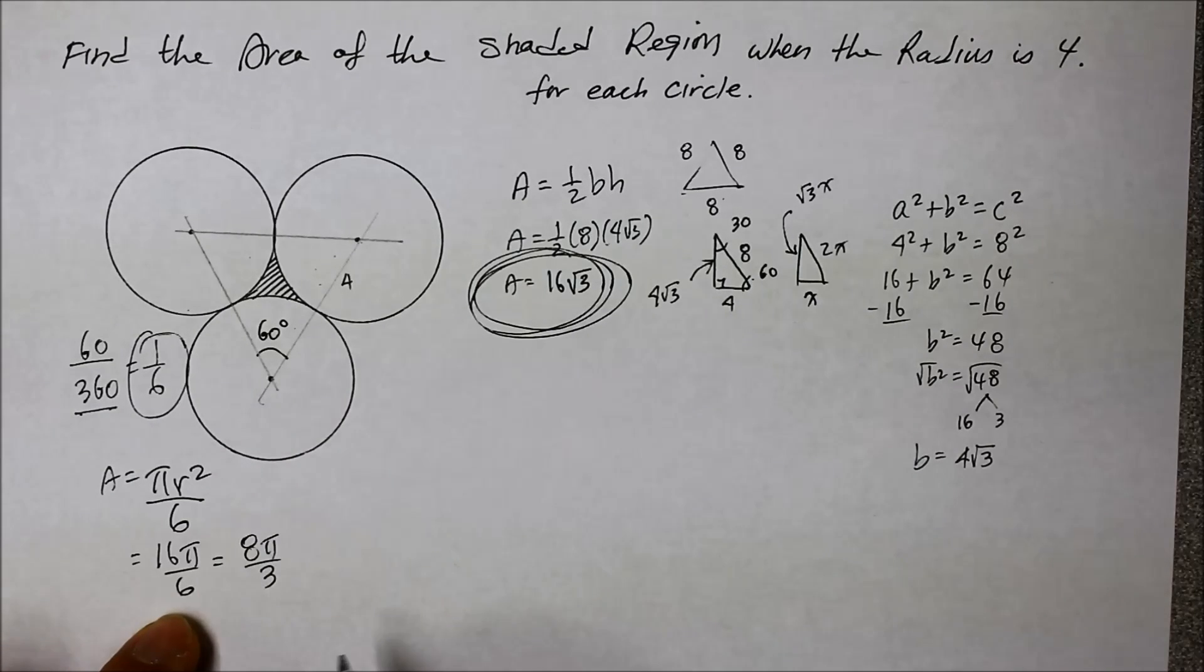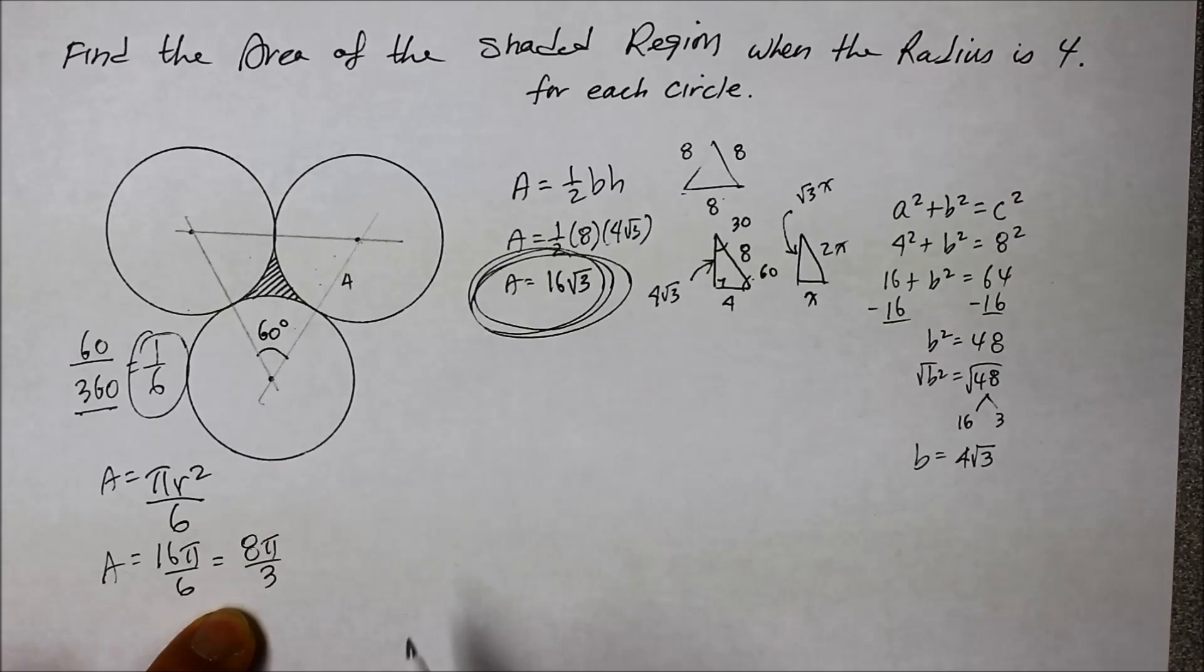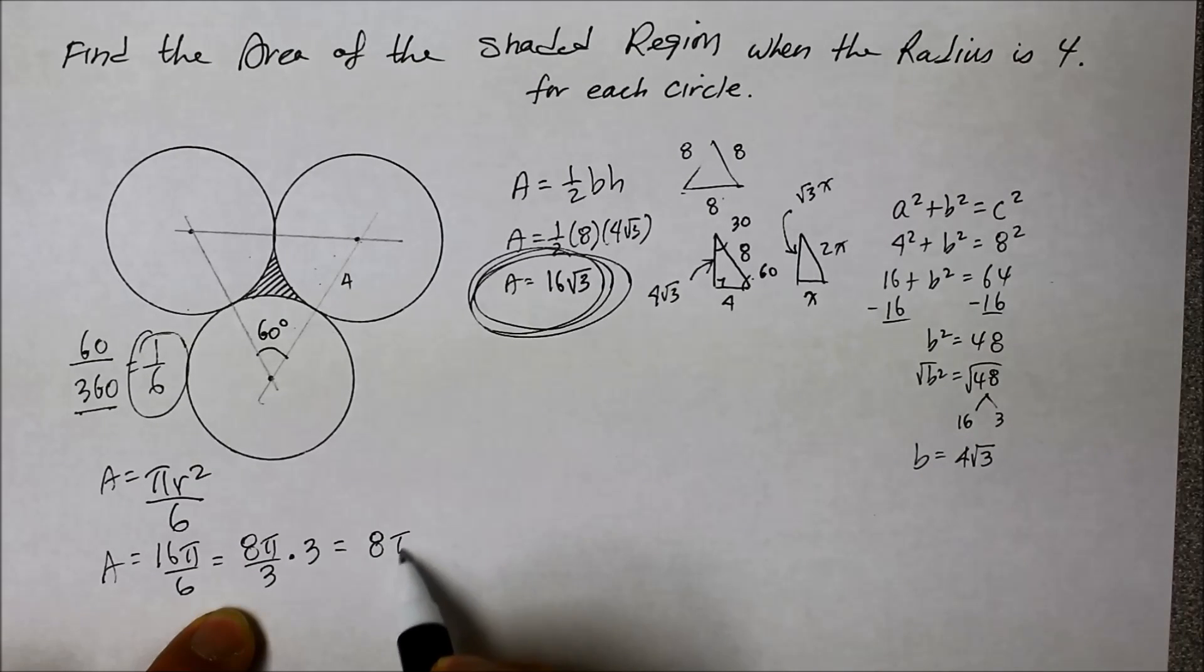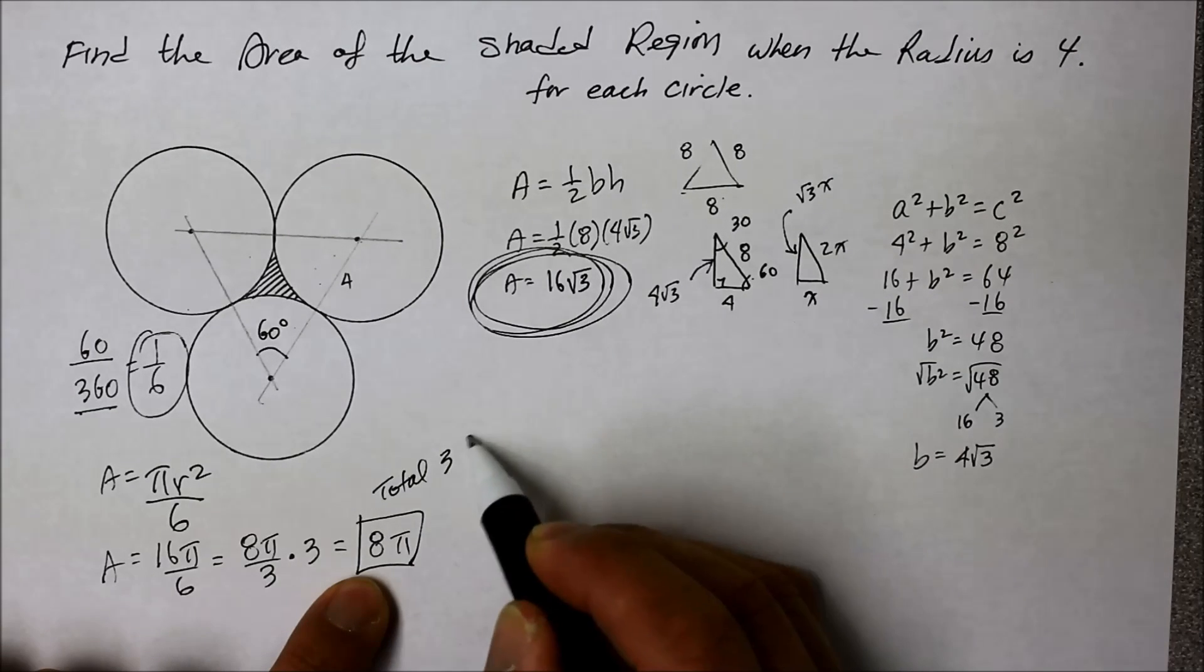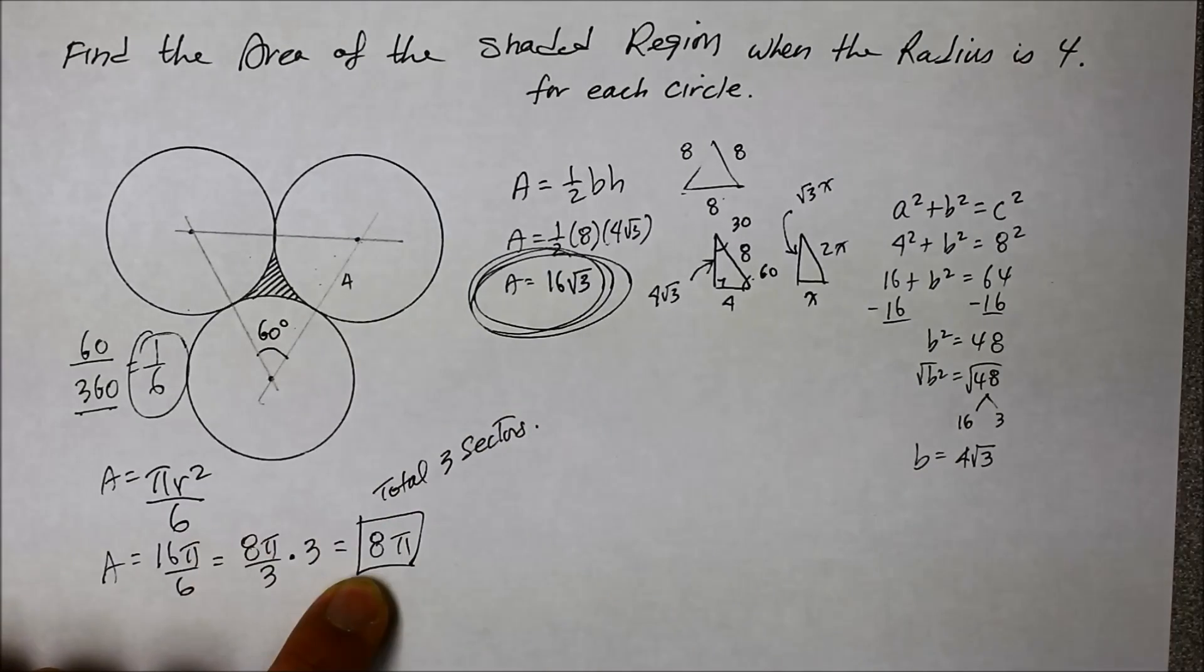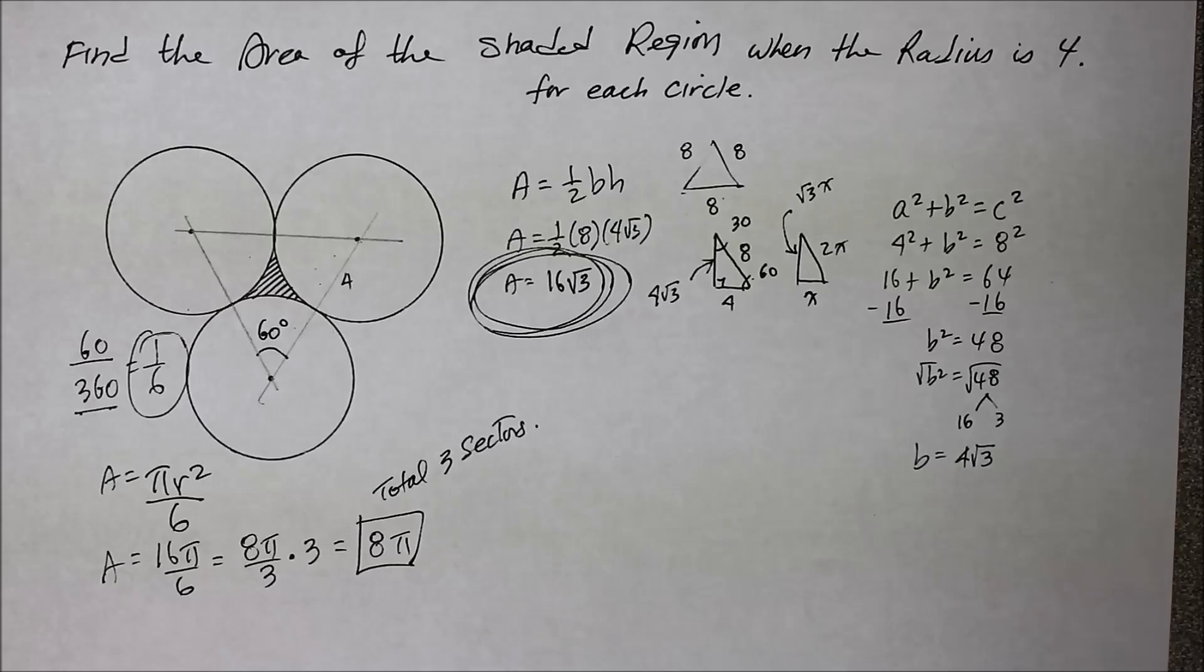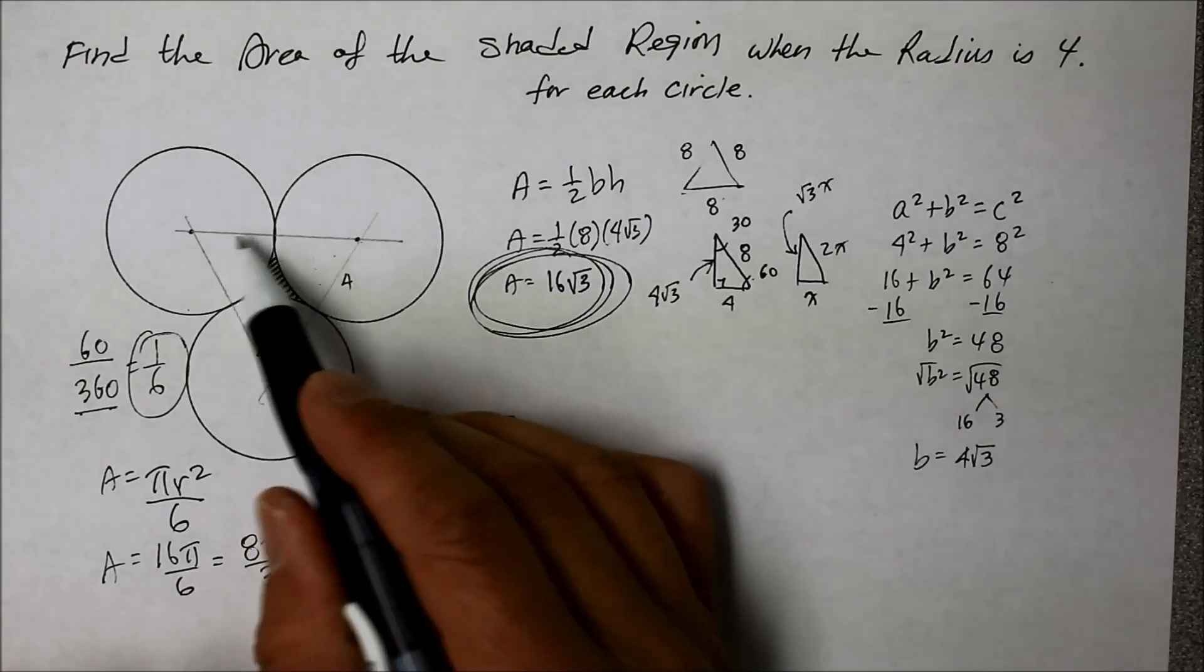And I'm going to reduce this and keep it in a quotient form. So that's going to be 8 pi over 3. But how many do we have? We have a total of 3 of those identical sectors. So we're going to multiply that by 3. And that's going to give me 8 pi. So what is this? This is the total 3 sectors of these 3 circles, that is.